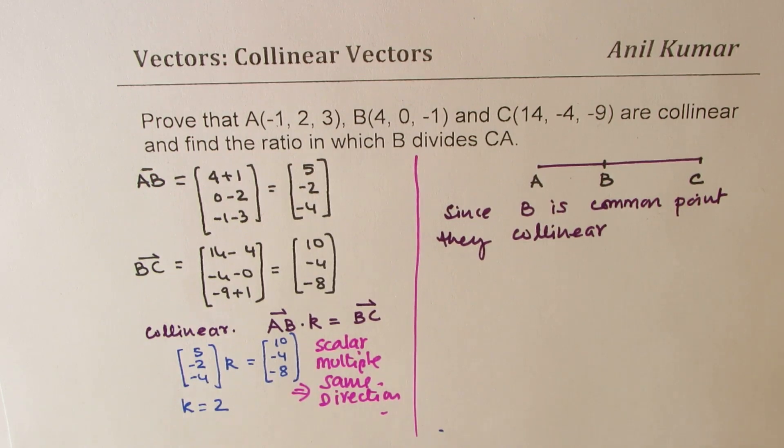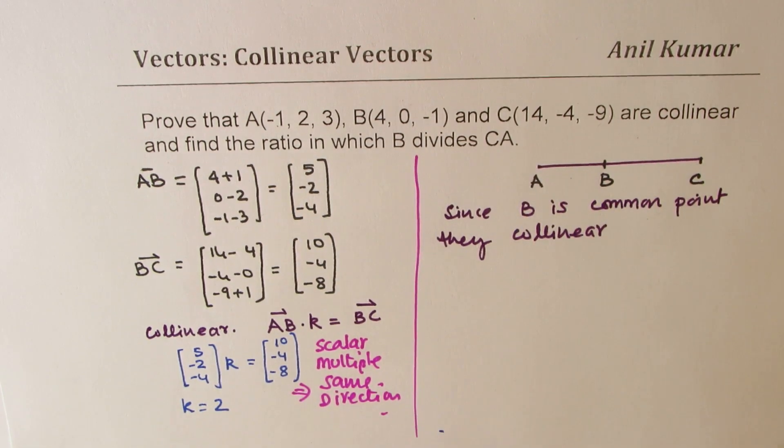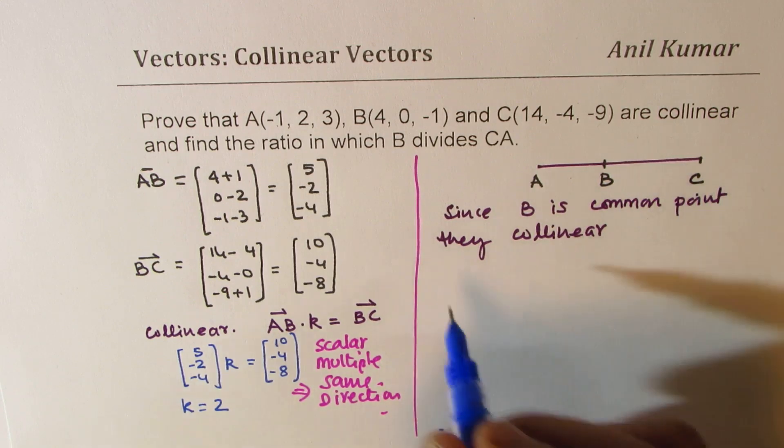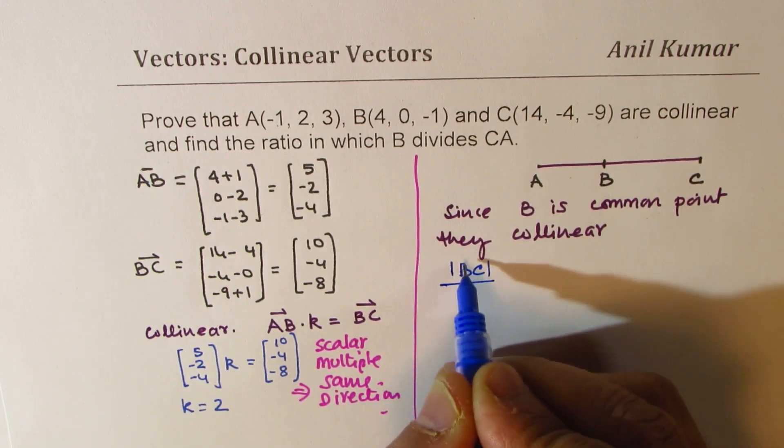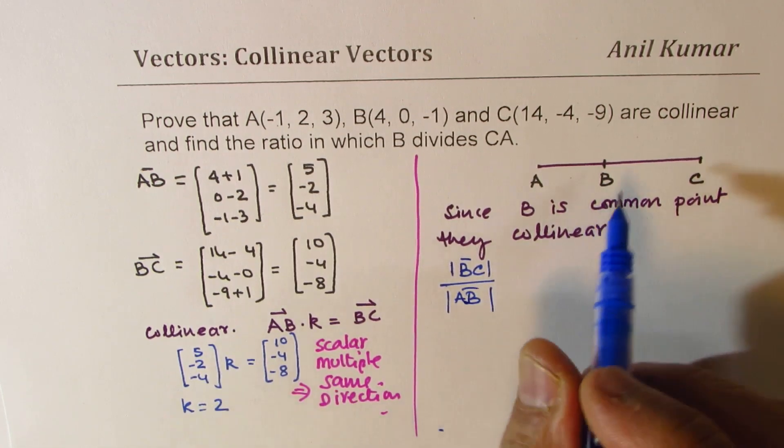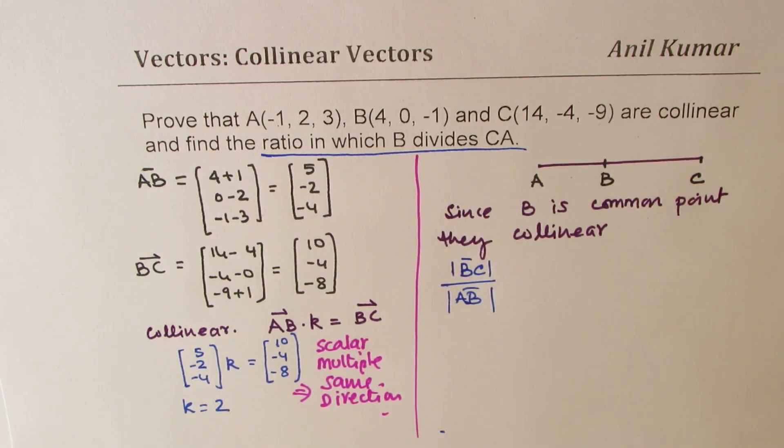Now let's look into the ratio in which B divides CA. So in what ratio do they divide? So what we can do is we can just find magnitude of BC and divide that by magnitude of AB. To do the second part, that is the ratio in which B divides CA.